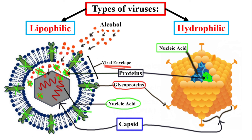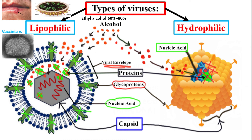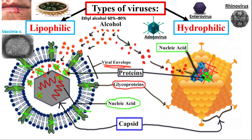Alcohol can also penetrate the viral capsid and denature proteins inside, and may denature capsomeres too. Ethyl alcohol at concentrations of 60% to 80% is a potent virucidal agent, inactivating all of the lipophilic viruses — for example herpes, vaccinia and influenza viruses — and many hydrophilic viruses, for example adenovirus, enterovirus, rhinovirus and rhodoviruses.